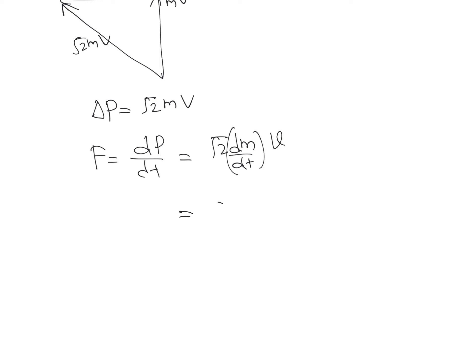We can write this as root 2 into dm by dt, which is the mass flow rate we already discussed, and mass flow rate is rho into A into V. So we can write this is root 2 times rho into A into V squared.